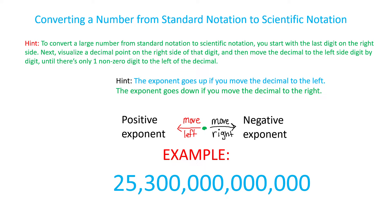Some things to keep in mind whenever going from standard notation to scientific notation: the exponent goes up if you move the decimal to the left, and the exponent goes down if you move the decimal to the right.